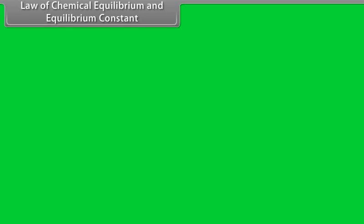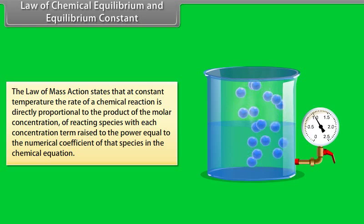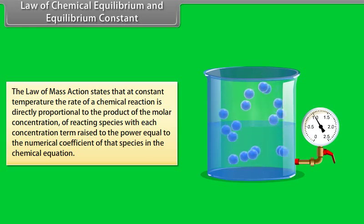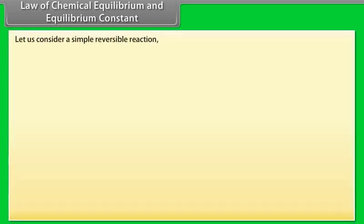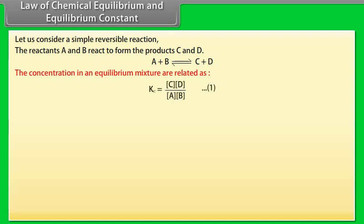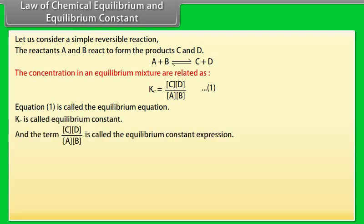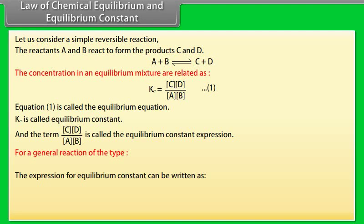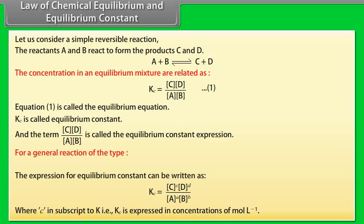Law of Chemical Equilibrium and Equilibrium Constant: The law of mass action states that at constant temperature, the rate of a chemical reaction is directly proportional to the product of the molar concentrations of reacting species, with each concentration term raised to the power equal to the numerical coefficient of that species in the chemical equation. For a simple reversible reaction where reactants A and B form products C and D, the equilibrium constant KC is expressed in concentration units of mol/L.